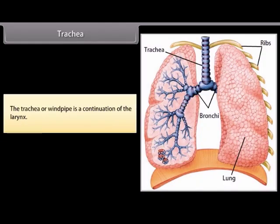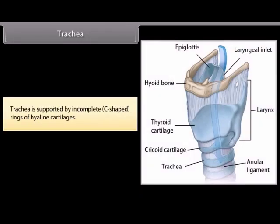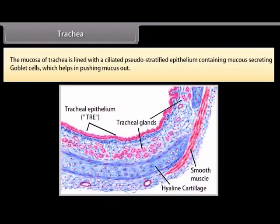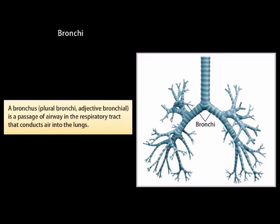The trachea or windpipe is a continuation of the larynx. It is supported by incomplete C-shaped rings of hyaline cartilages. The mucosa of the trachea is lined with ciliated pseudo-stratified epithelium containing mucus-secreting goblet cells, which help in pushing mucus out. A bronchus (plural bronchi) is a passage or airway in the respiratory tract that conducts air into the lungs.